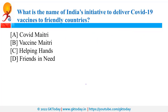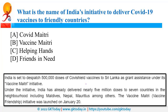India's initiative to deliver COVID-19 vaccines to friendly countries is called Vaccine Maitri. Under this initiative, we are providing vaccines to neighboring countries. For overall monitoring of the entire vaccination process, the COVID platform was launched. Apart from that, an empowered group was constituted for the COVID-19 vaccine.